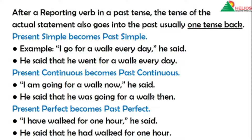Present continuous becomes past continuous. Present continuous states or denotes an activity happening now. Example: 'I am going for a walk now,' he said — an activity happening right now, present continuous. It is changed to past continuous, in which the activity moves into the past — an activity in the past. So: He said that he was going for a walk then.